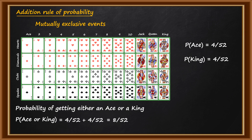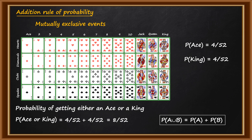The general formula for the addition rule of probability — that is, probability of A union B — for mutually exclusive events where there are two events A and B: probability of A union B is equal to probability of A plus probability of B. This is the formula when the events are mutually exclusive.